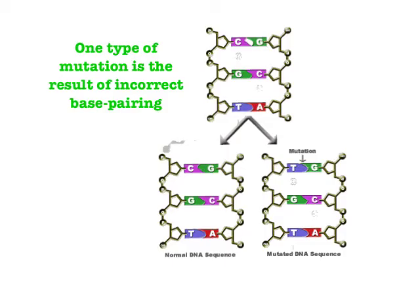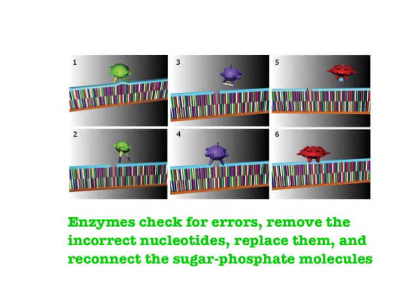Luckily, most of these errors can get picked up and corrected. Enzymes are involved in error correction: a first enzyme detects a wide spot in the strand, sensing that the strands aren't perfectly parallel, and deletes the mistake. A second enzyme then comes in and puts the correct base into that spot. Finally, a third enzyme comes along and rebuilds the sugar-phosphate bridge. So enzymes play a major role in both the replication process and in correcting errors and mutations.